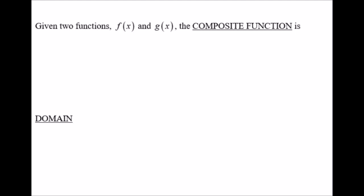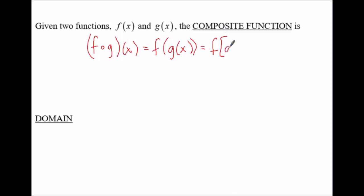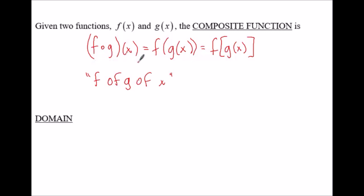First, a couple of definitions. Given two functions f of x and g of x, the composite function can be written in circle notation, which is the same as f of g of x written in nested form, which is also the same as another notation. This middle notation is the one you probably saw in Algebra 2. The one we are going to primarily use in pre-calculus is the first notation.